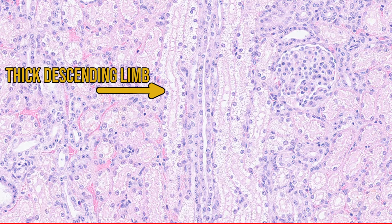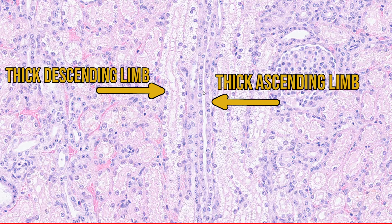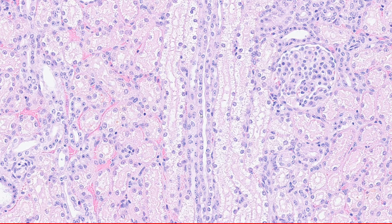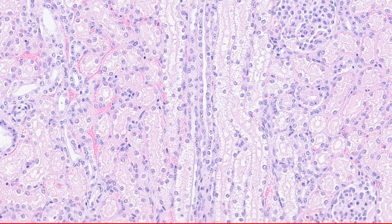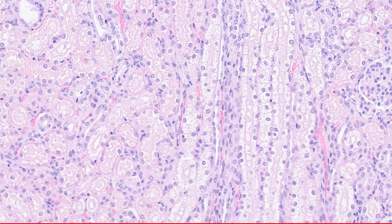Similarly, right next to this thick descending limb we have a thick ascending limb, which looks very similar histologically to the distal convoluted tubules, such as this one over here. So let's head a bit deeper down into the medulla and see which other tubules we can find.